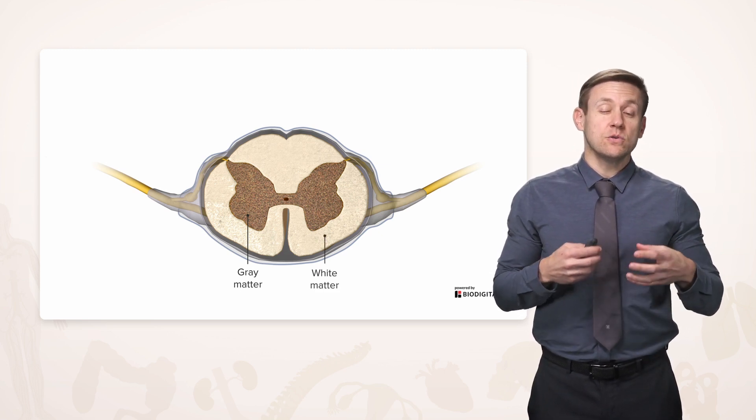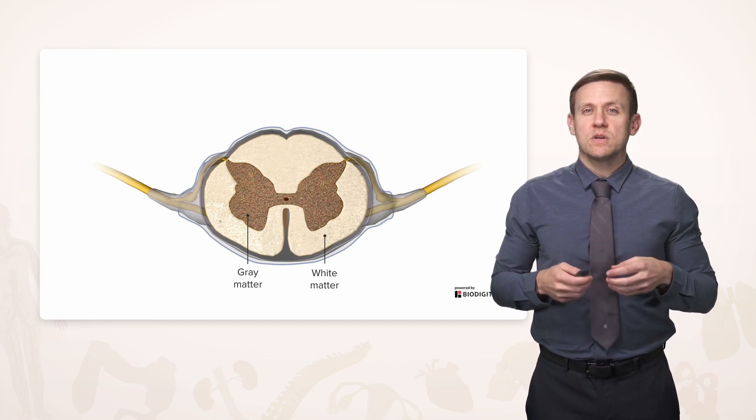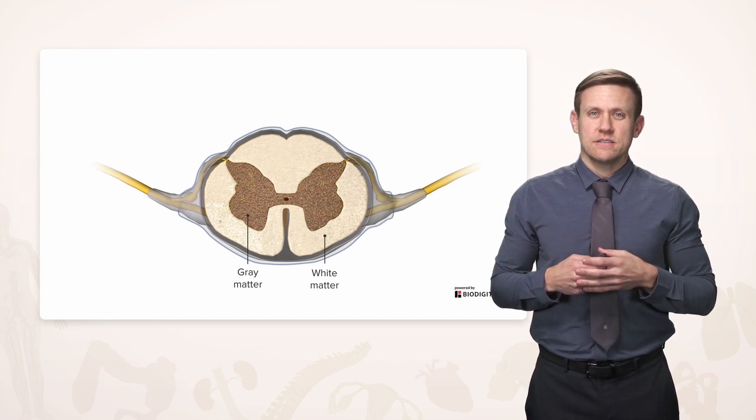Again, the gray matter represents where cell bodies and nuclei are, and the white matter where myelin of axons is going to be located.